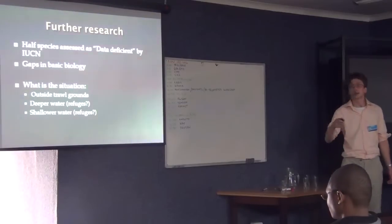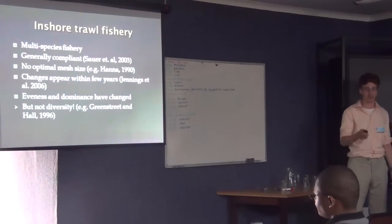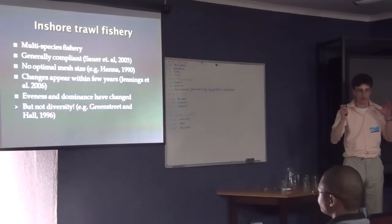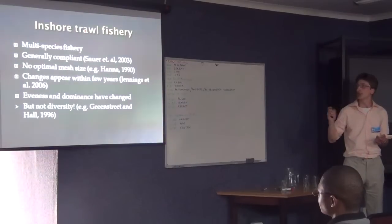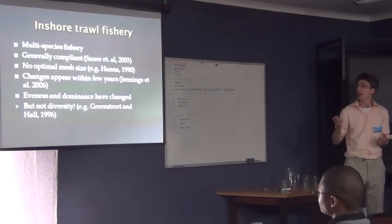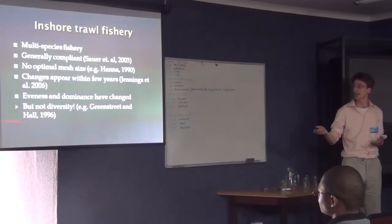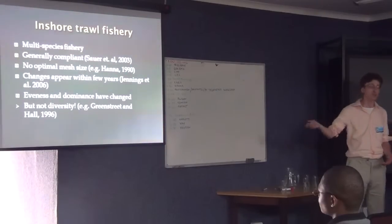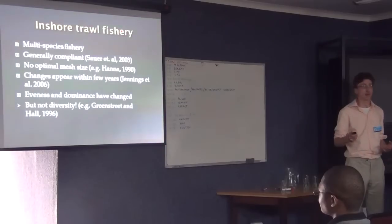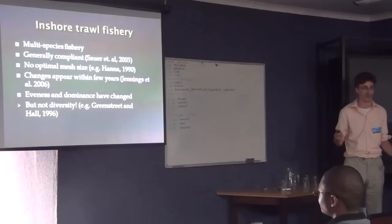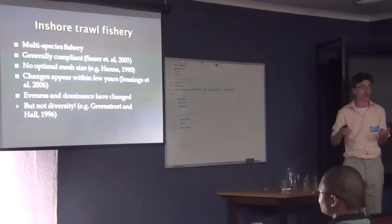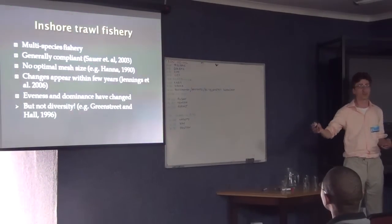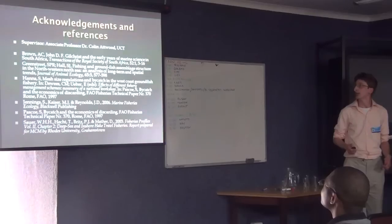But I think trawl fisheries are different because they're non-selective, and the inshore trawl fishery is no exception. We know that it's generally compliant. We know that there will never be optimal mesh size that accounts for all species equally. We know that the changes happen within a few years in the ecosystem. And on top of it, evenness and dominance have changed. But actual diversity is remarkably resilient to trawling pressure. We've seen that we haven't actually lost any species. So maybe we can have a bit more of a discussion rather than a question and answer session about whether we really need to do anything. If the fishery is well managed and we have lots of these species, is it worth implementing measures that might change the fishery into a direction that we can't even begin to comprehend?